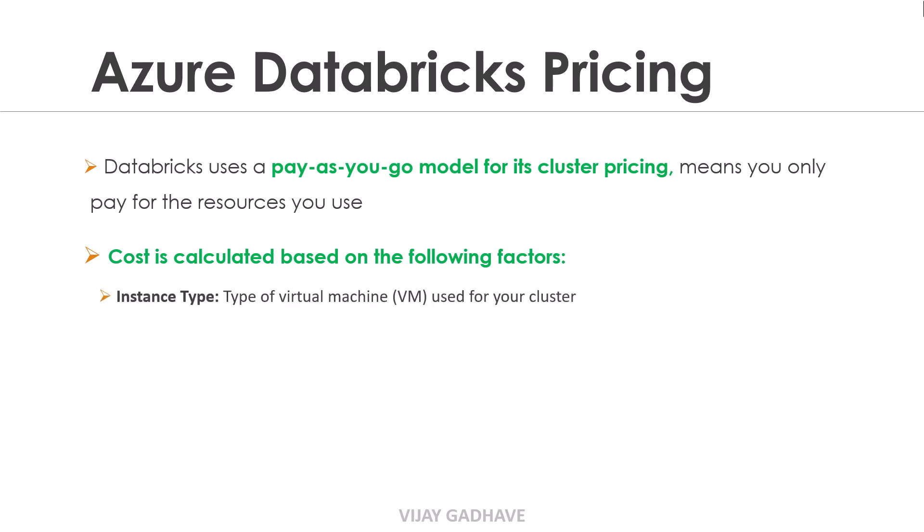The first factor is instance type. Instance type is the type of virtual machine used for your cluster. Databricks offers various instance types with different processing power and memory capacities. The more powerful the instance, the higher the cost per hour.